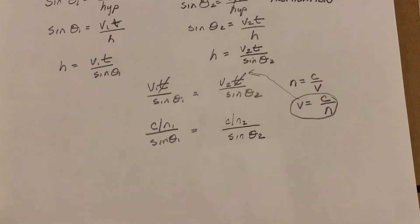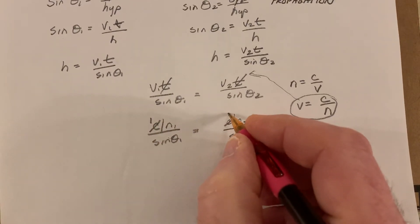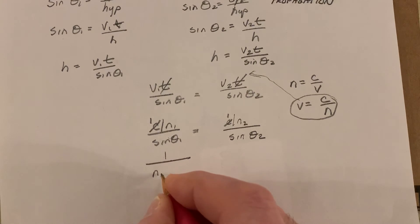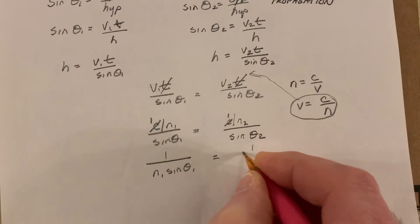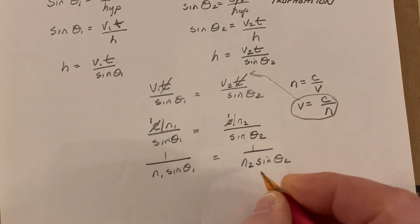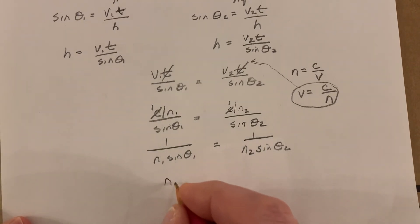Now, we can bring that down. We can get rid of the c's, which both become 1's. The n's can go to the bottom. They're both in the denominators. And we can just reciprocal both sides, and we're left with Snell's Law.